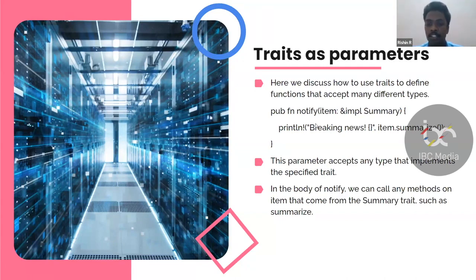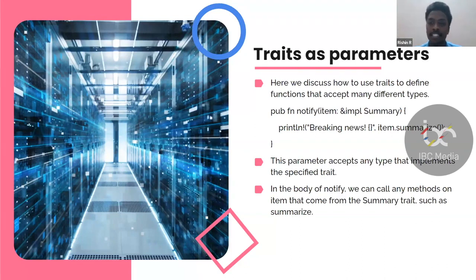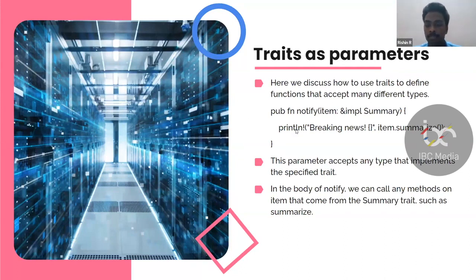This might not be useful every time, but in case of some implementations or definitions, you might want to use traits as parameters. In general, it's better to learn all the possibilities you have when working with a language. With `impl Summary`, you can actually pass a trait as a parameter, and then it can be called as a function.